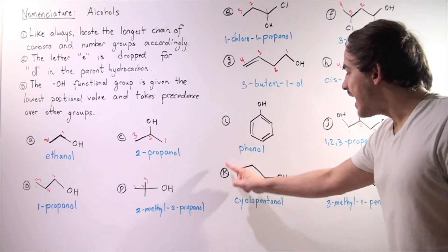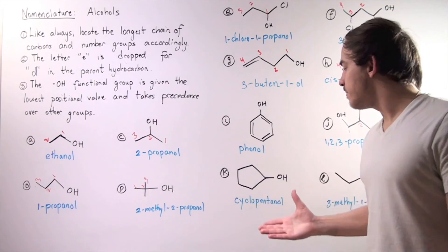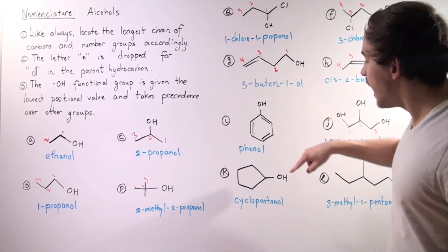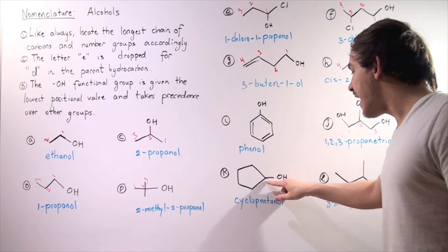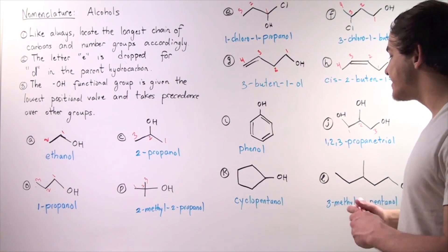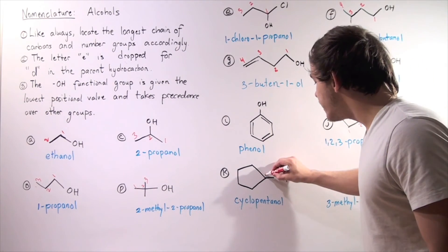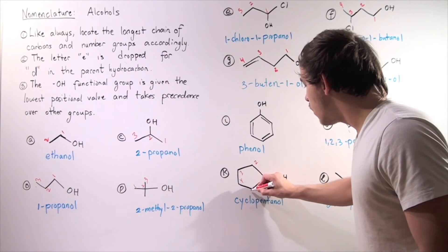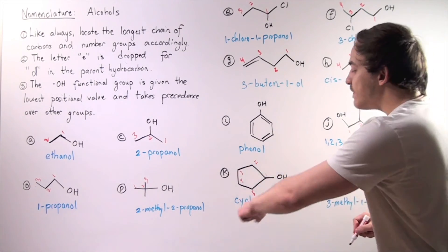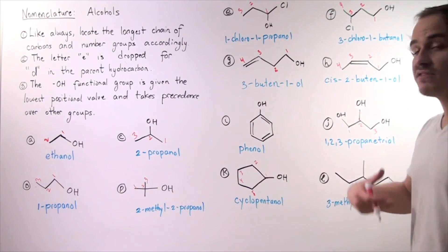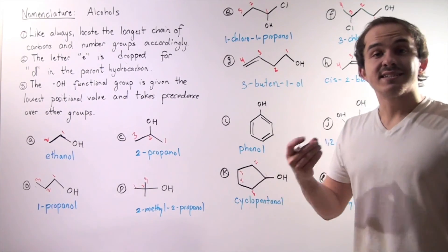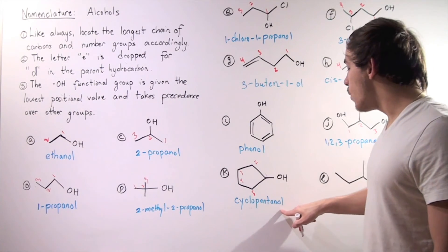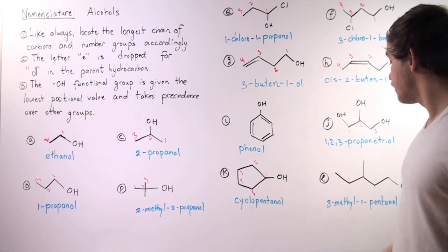Example K: we have a cyclic compound — a ring. We have to begin on the first carbon where our OH is attached: one, two, three, four, five. We have a five-carbon ring, which means we have cyclopentane, and we replace the E with -ol. So the name is cyclopentanol.